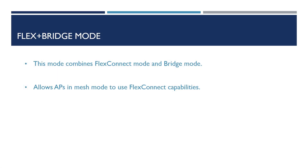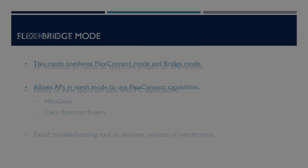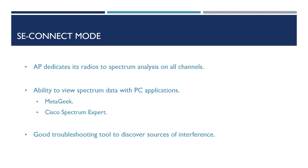Flex and Bridge mode combines the functions of both Flex Connect Mode and Bridge Mode into one. The main benefit is to allow you to use the benefits of Flex Connect whilst using your APs in Mesh Mode. Finally, SE Connect dedicates its radios within the AP to perform spectrum analysis across all wireless channels. This allows us to view the raw spectrum data with PC applications like Metageek and Cisco Spectrum Expert, providing an excellent troubleshooting tool when trying to discover sources of interference remotely.